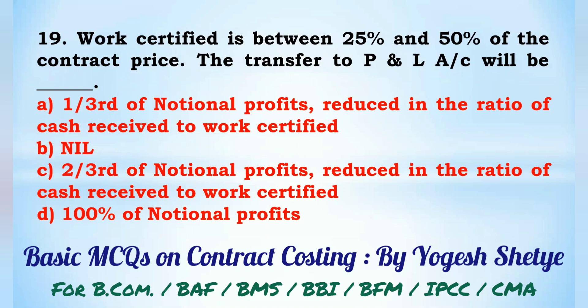Question 19: When work certified is between 25% and 50% of the contract price, the transfer to profit and loss account will be — (A) 1/3rd of notional profit reduced in the ratio of cash received to work certified, (B) 2/3rd of notional profit reduced in the ratio of cash received to work certified, (C) 100% of notional profits. Answer: A — 1/3rd of notional profit reduced in the ratio of cash received to work certified.